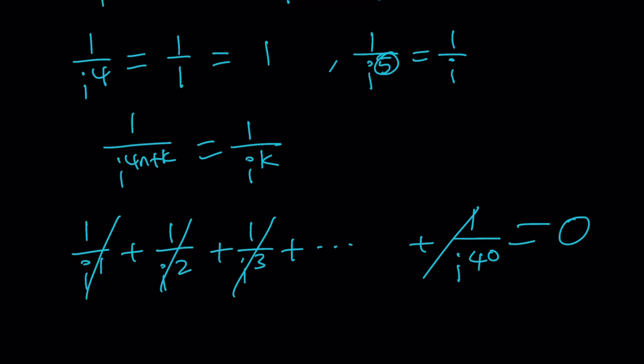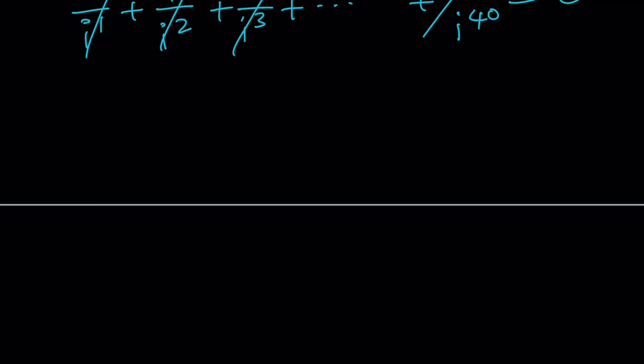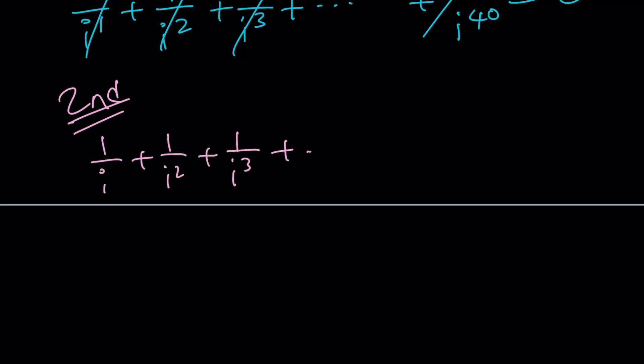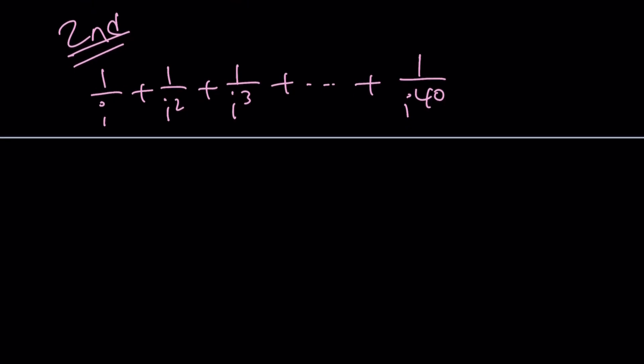Okay, let's go ahead and take a look at an alternative method for solving this problem. Second method. So 1 over I plus 1 over I squared — sometimes your teacher might say they want you to use a particular method, or the test will ask for a certain method to ensure students know how to use it. Anyway, here's one thing: this is a geometric series — a finite geometric series.